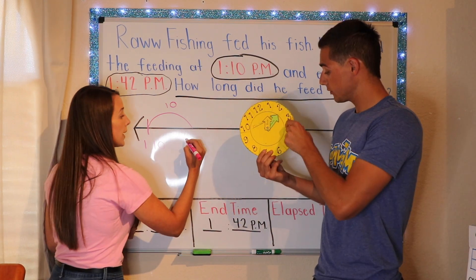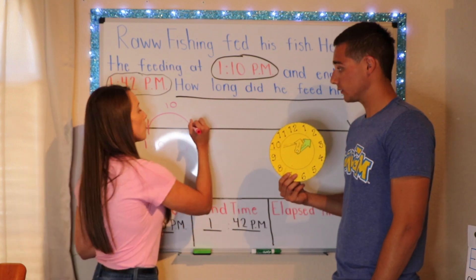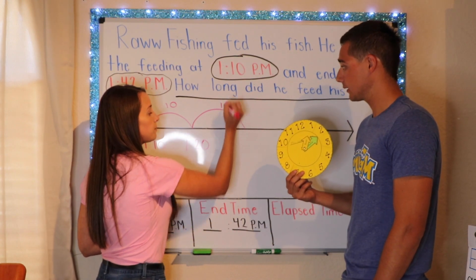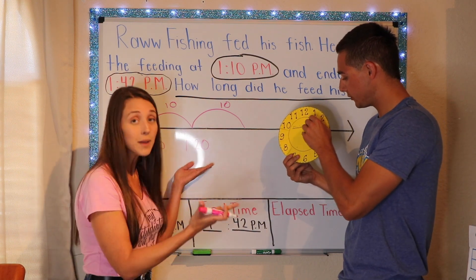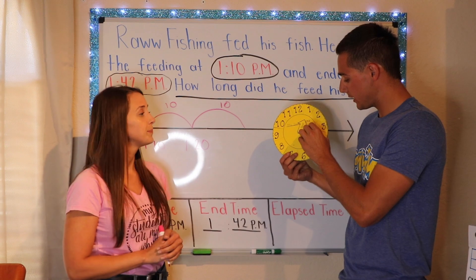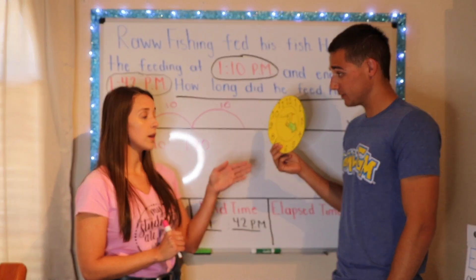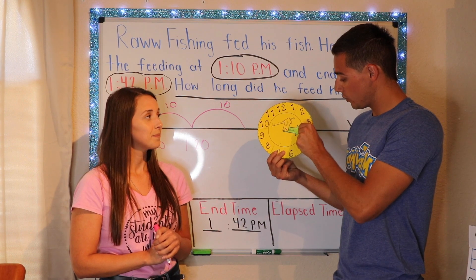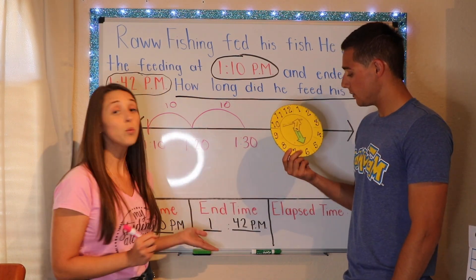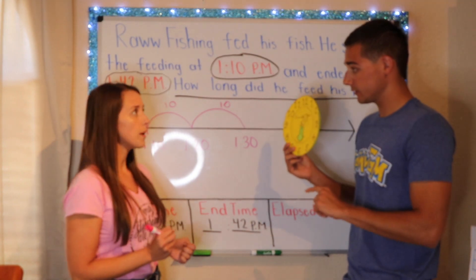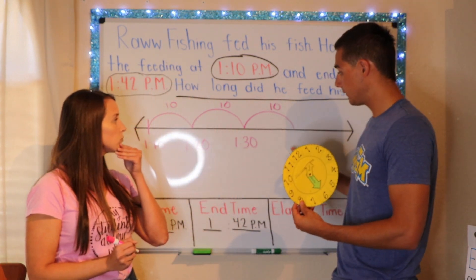We are at 1:20 — are we at 1:42 yet? Nope, we've got to keep going. I'm going to do another jump of ten, and we're at 1:30. Can we make another jump of ten? One more is left. You know that because 10, 20, 30, 40 — all you did was add ten to 30. And you could literally do that on your fingers. Can we make any more hill jumps? If we make another five, that would be 1:45 — too far.